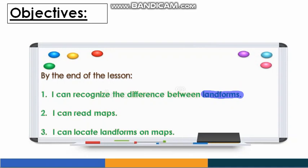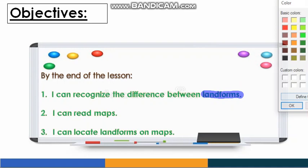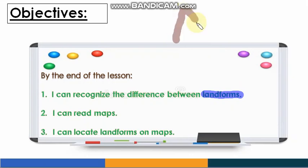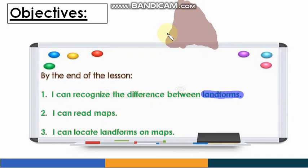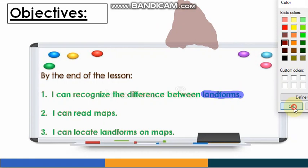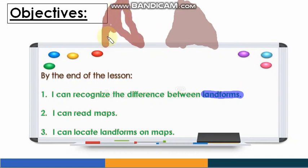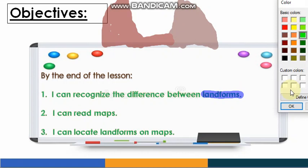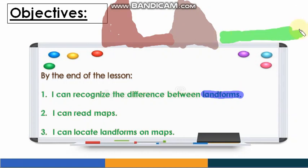Let me draw some landforms for you. I'll use the brown color. This is a mountain, and this is another mountain. Now, what do we call this area in the middle of the two mountains? Valley — well done! So here we have mountains and valleys.